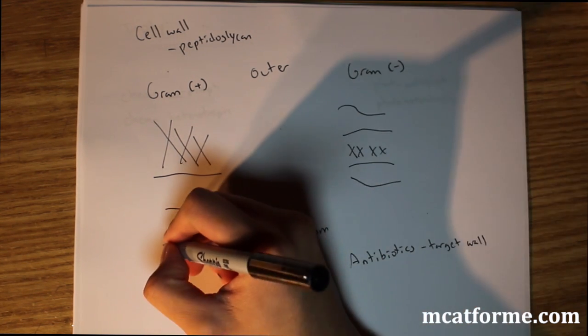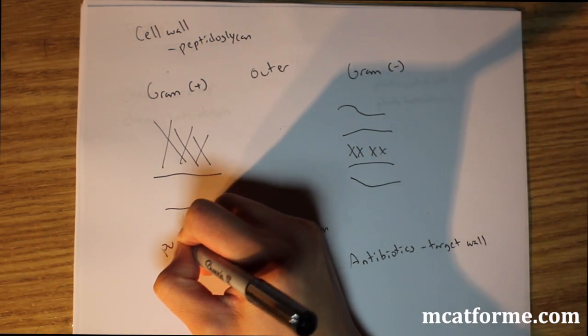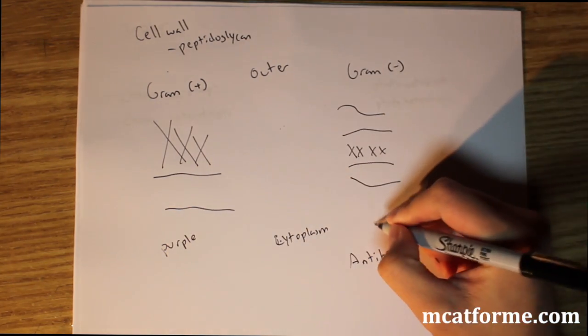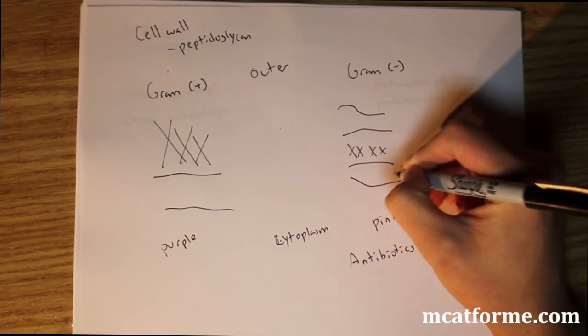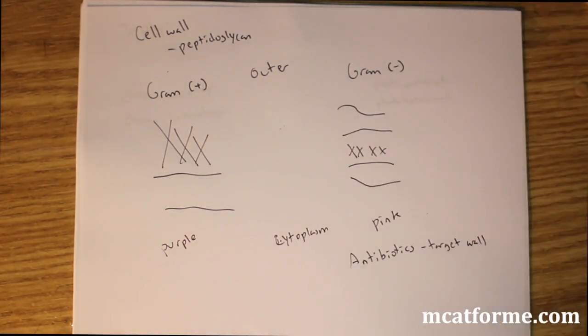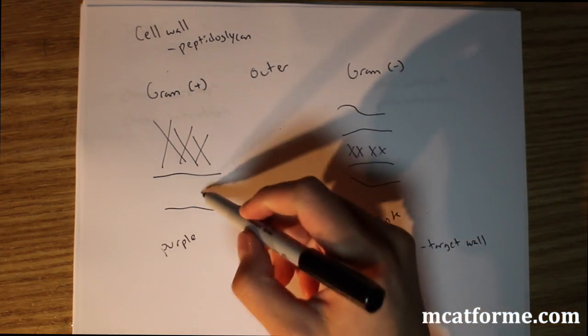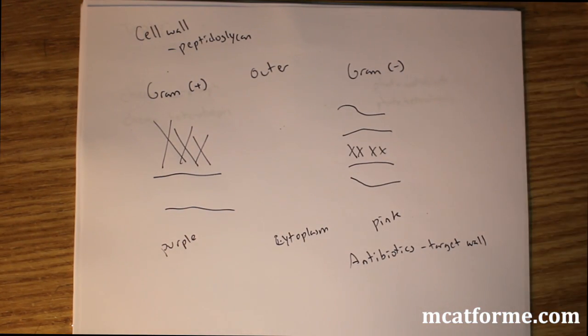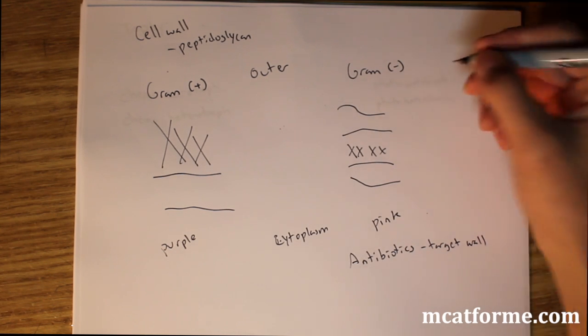So gram stains, gram positive is purple and gram negative is pink. And this area that I didn't mention before is just the plasma membrane. So this would be a plasma membrane and this would be inner and outer. So gram negative has an inner and outer plasma membrane.